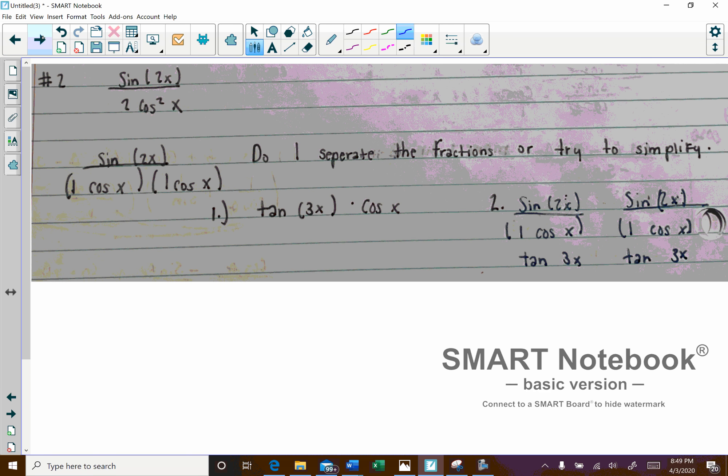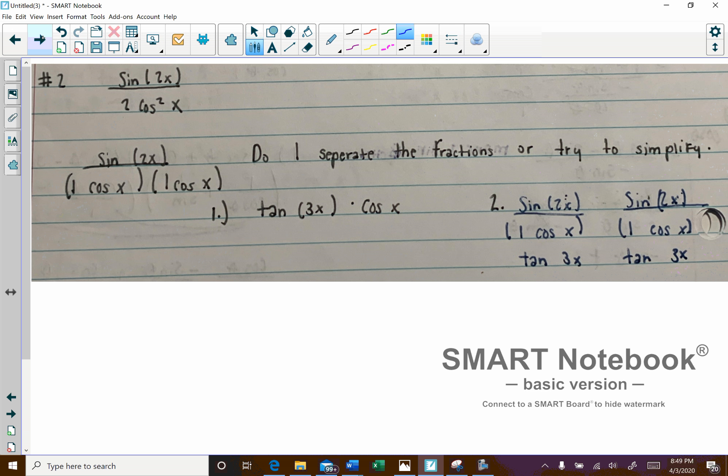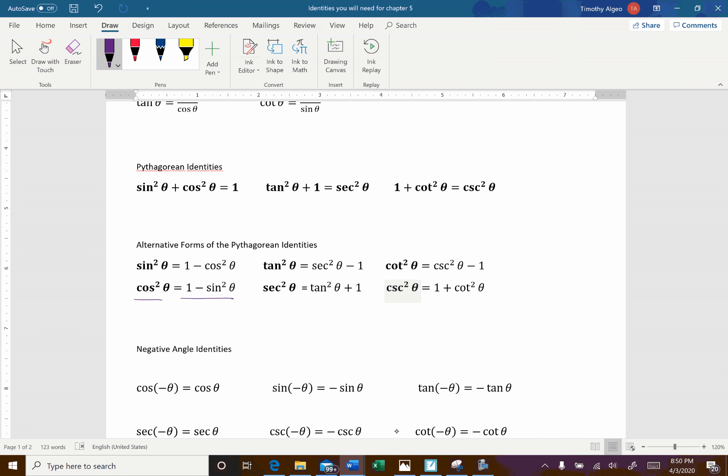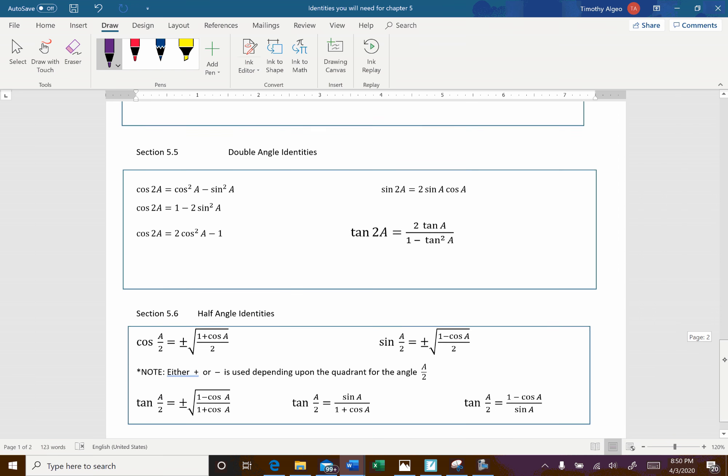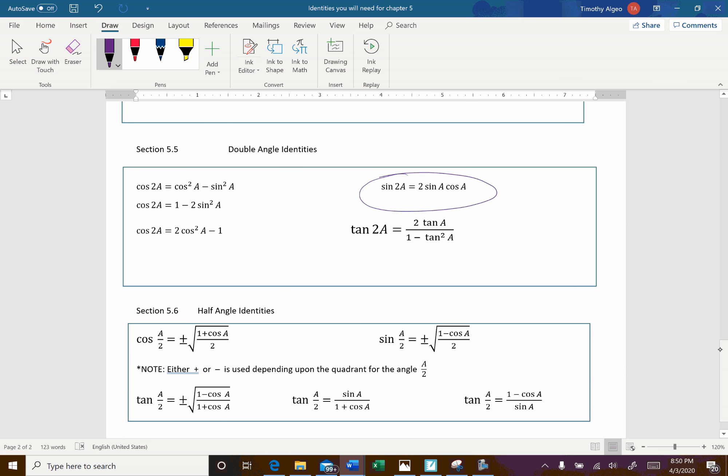Here's our next one that you sent. And so what we want to do here, if you look at sine of 2x, I'm going to go back to our identities. Here we go. So you can see right here we have sine of 2a equals 2 sine a cosine a. So that's the first one that I'm going to apply here.